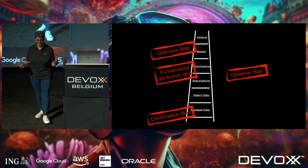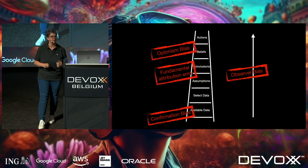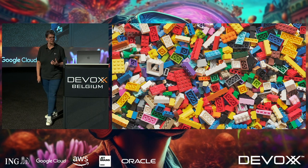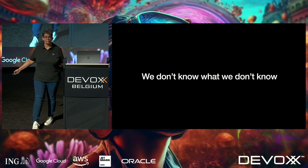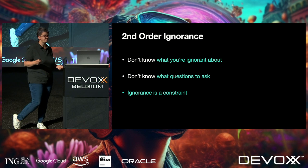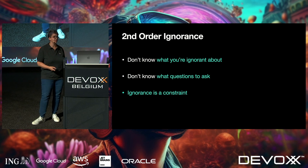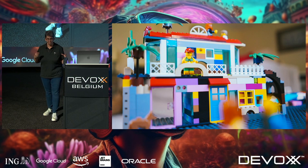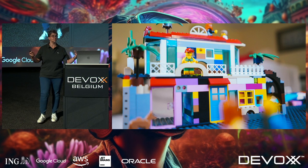Second order ignorance: we don't know what we don't know. We can't plan for it; we don't even know what questions to ask. You can't put something on the front of a sprint that says 'spend two weeks doing a spike because I might be ignorant about something.' You don't know what you're ignorant about. Knowledge is not the constraint here — ignorance is the constraint. So where does that leave us? We have biases, a paradigm, and second-order ignorance. None of this is our fault — it's all happening on a completely unconscious level.